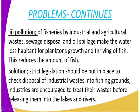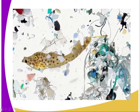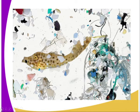The solution to pollution is that strict regulations should be put in place to check the disposal of industrial waste into fishing grounds. Industries are encouraged to treat their waste before releasing it into lakes and rivers. As you can see in the image, small fish have started feeding on plastic. These plastics are not digested, which affects the fish's digestion system.